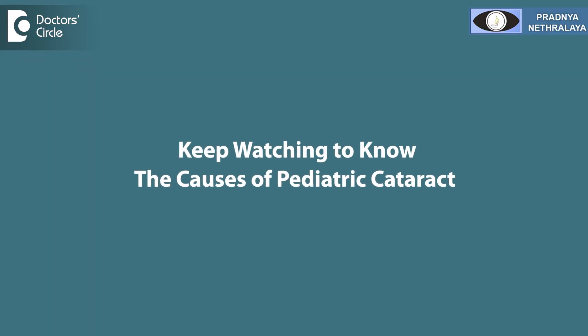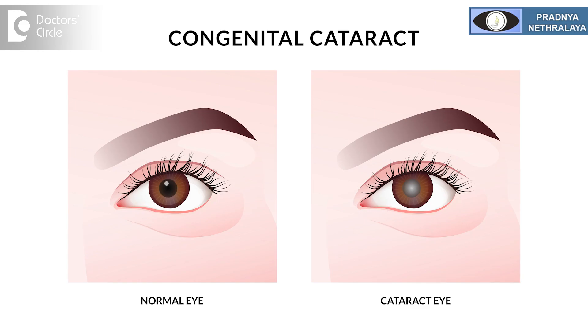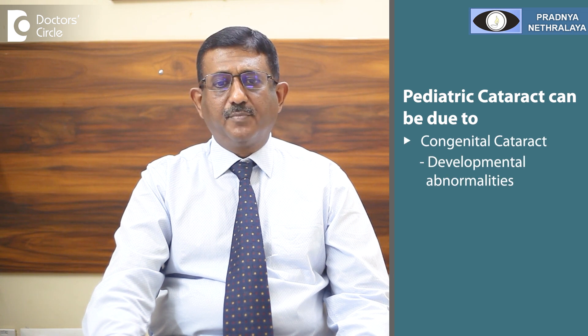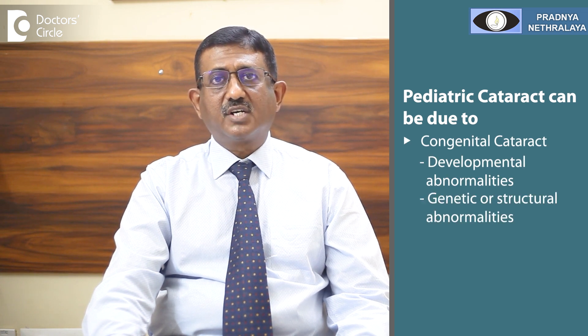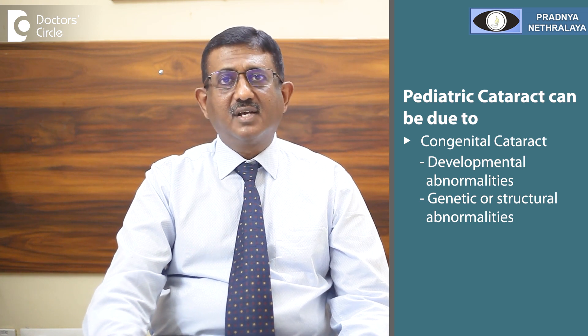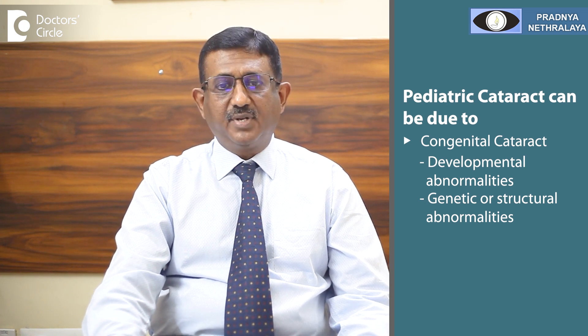What are the causes of pediatric cataract? They may be congenital, that is they may be born with a cataract. Three out of 10,000 children have cataract. The abnormalities may be developmental, genetic, or structural abnormalities of the eye. It occasionally runs in families.